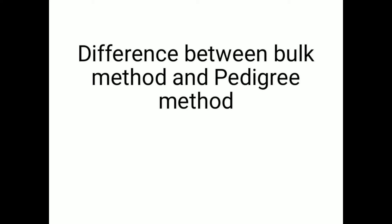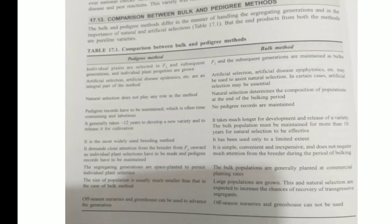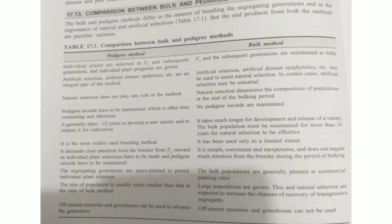What is the main difference? The bulk and pedigree method differ in the manner of handling segregating generations and in the importance of natural and artificial selection. But the end product from both the methods is pure line varieties.